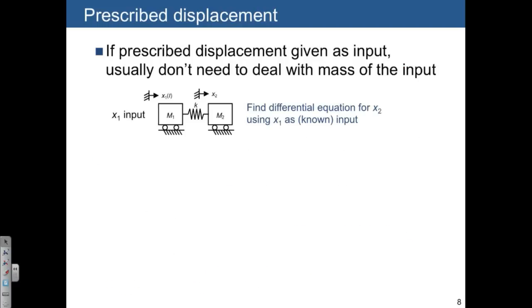Let's take a look at another example with a prescribed displacement where we are not initially concerned with the force. We have a two-mass system here with a spring in between. X1, the motion of the first mass, is the input, and X2, the motion of the second mass, is the output.